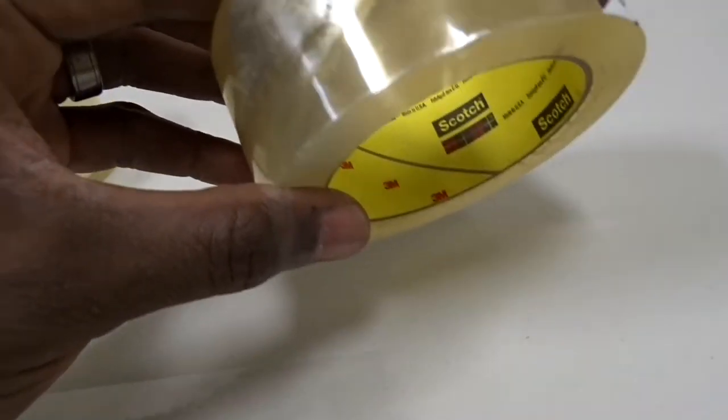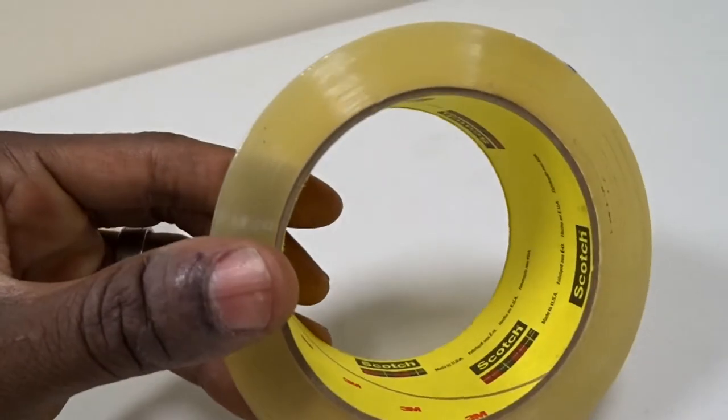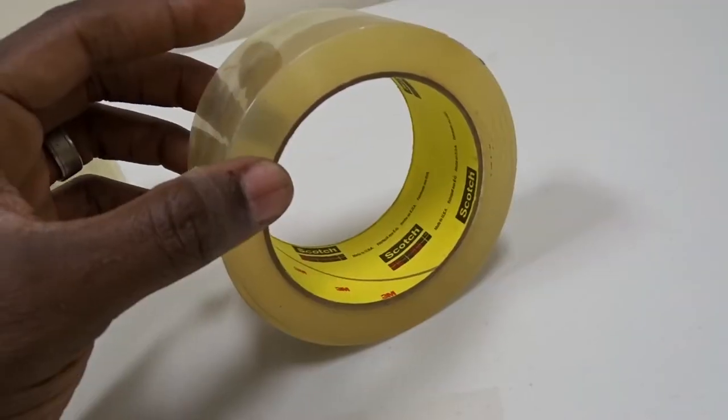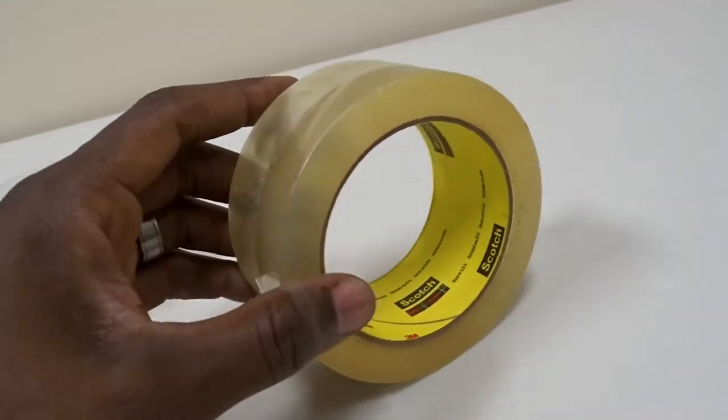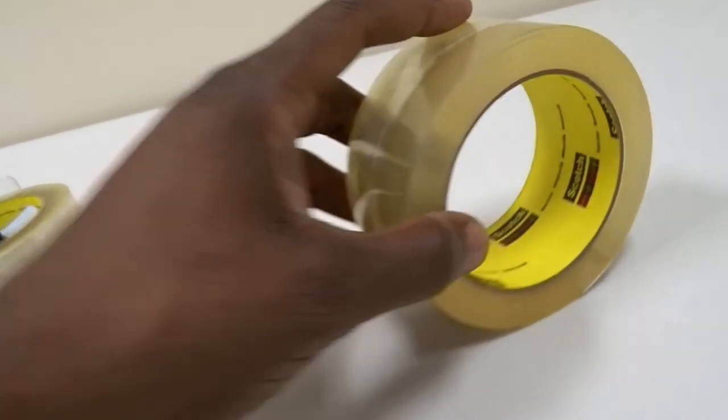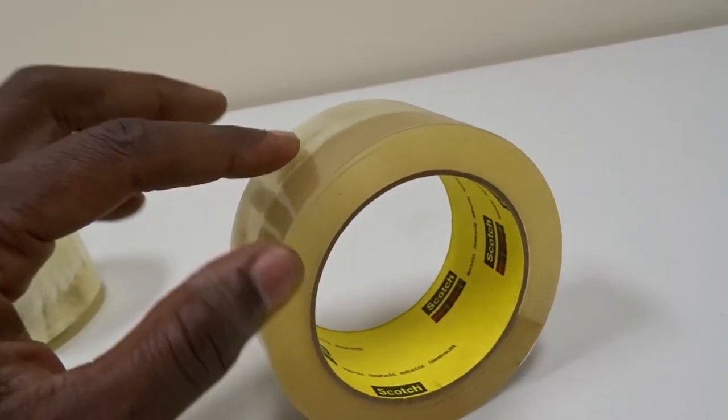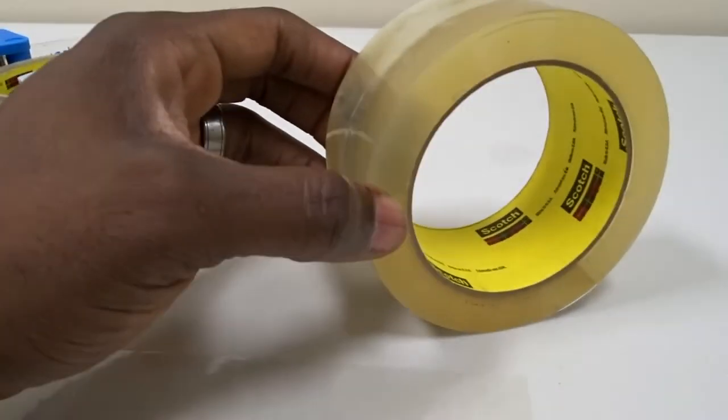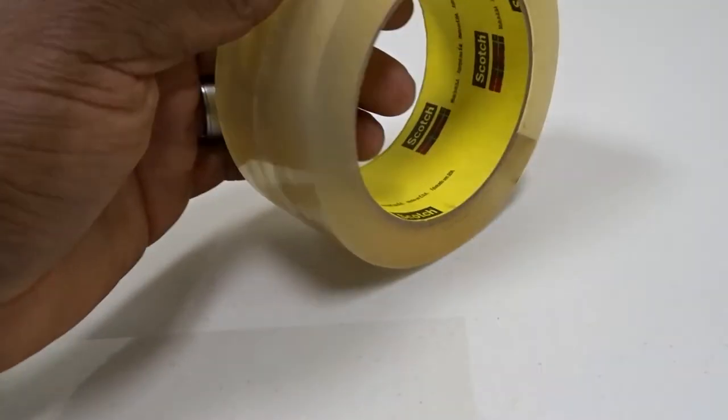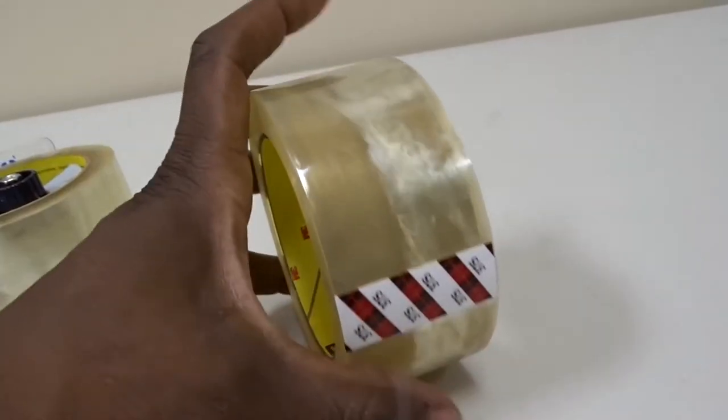When you tape it down, it goes on clear. Even though it looks kind of yellowish here, that's just because it's concentrated, layer after layer. But once you get it off in that one layer, it's almost virtually invisible. So it's really a good tape.